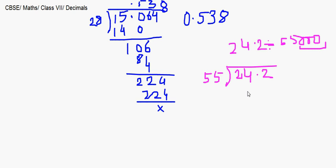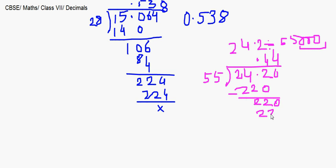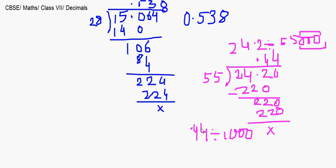Dividing 24.2 by 55: 55 × 4 = 220, so quotient starts with 4, remainder 22. Bring down a zero to get 220 again, giving 0.44. Now we apply the three zeros we set aside — dividing 0.44 by 1000 moves the decimal three places to the left, giving 0.00044.